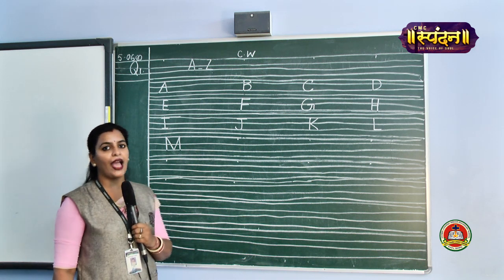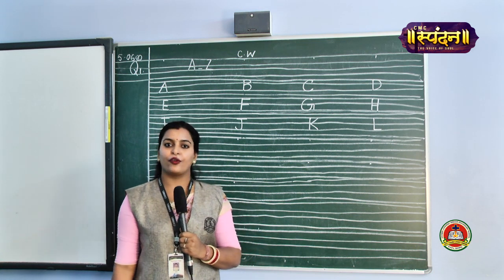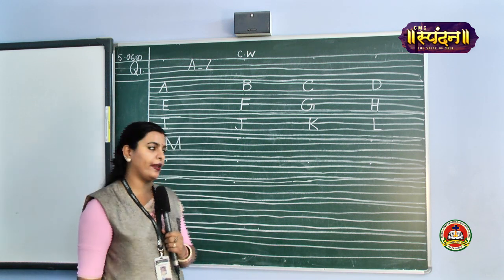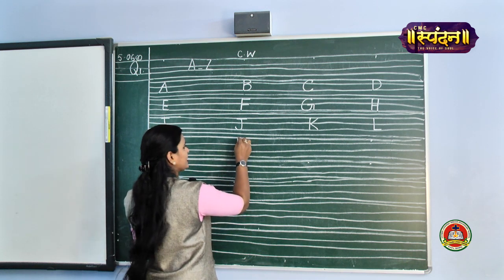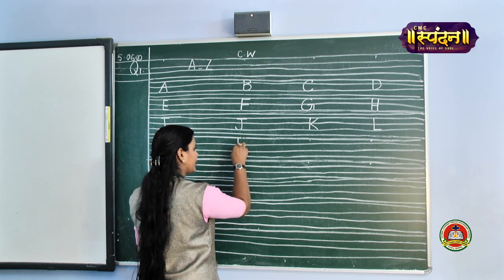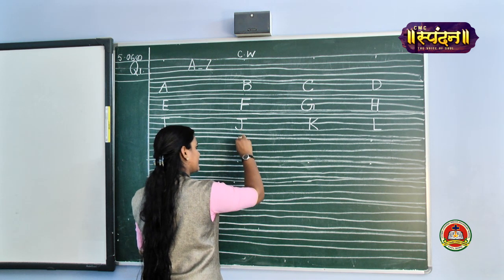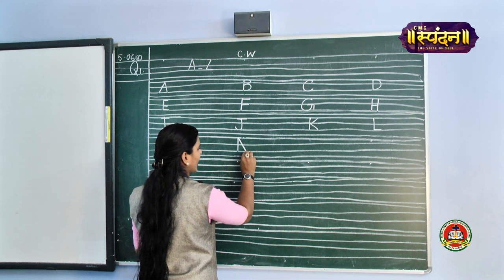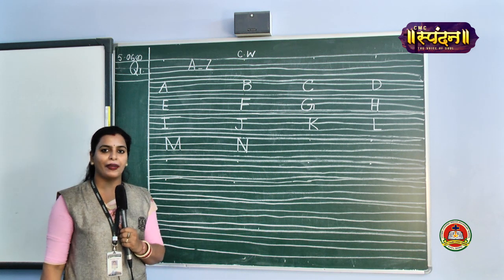Next we have alphabet N. N is for nose, N is for nest. Our next alphabet is alphabet N, just below J. We will start from the pink line, bring it to the black line, then again start from the pink line, make a slanting line to the black line, and then go back up again. This is alphabet N.